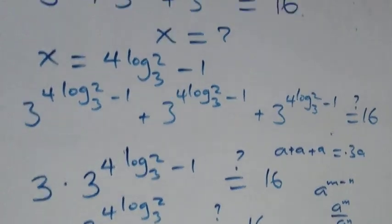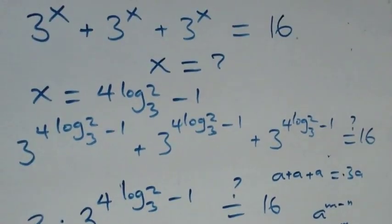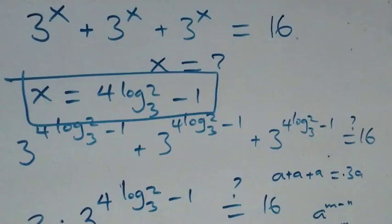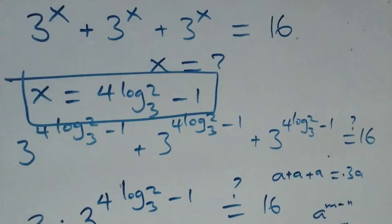Hence we can conclude that x equals 4 log₃2 minus 1 satisfies this given problem. Thank you for watching at Master T Math Class. Don't forget to subscribe for more videos, turn the notification bell on, share this video, give it a thumbs up, leave a comment, and join our membership package for access to more videos and exclusive content. See you next class — bye for now!